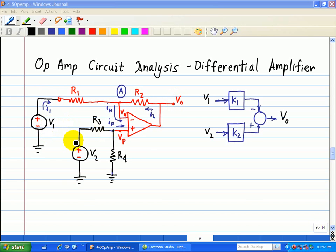First of all, the output due to V1 is VO1. And you can see it's an inverting amplifier, so it's minus R2 over R1 times V1.